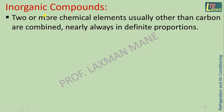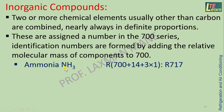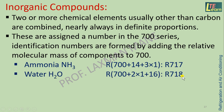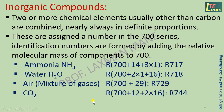Inorganic compounds are those where two or more chemical elements, usually other than carbon, are combined — nearly always in definite proportions. These are assigned a number in the 700 series, where identification numbers are formed by adding the relative molecular mass to 700. For example, for ammonia: nitrogen atomic weight 14 plus 3 hydrogen gives 17, so 700 + 17 = R717. Similarly, water gives R718, air (molecular weight 29) gives R729, and there are designations for carbon dioxide and sulfur dioxide as well.